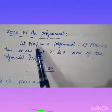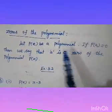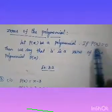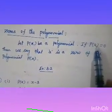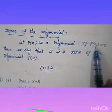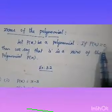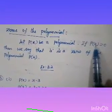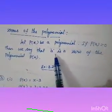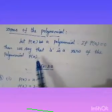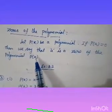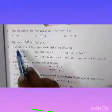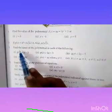Let p of x be a polynomial. Instead of x, you have to substitute any value. When you substitute and get the remainder zero, we say that value is called the zero of the polynomial.